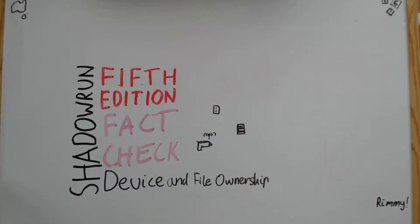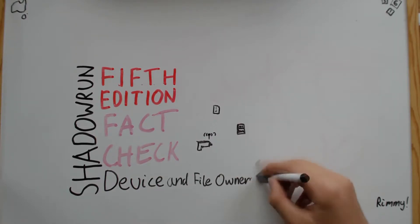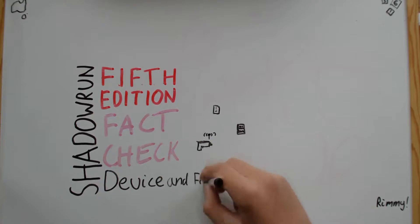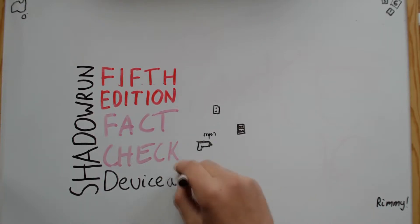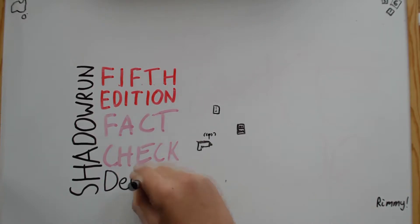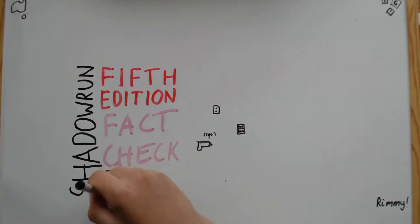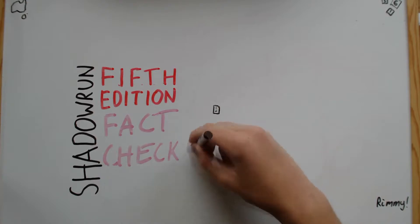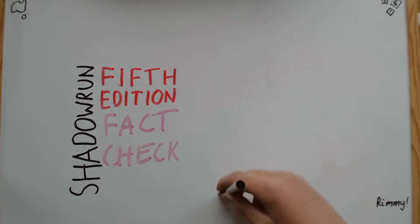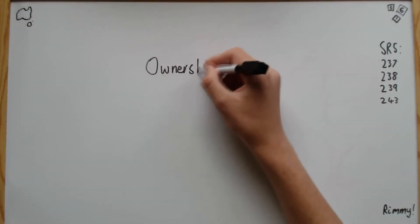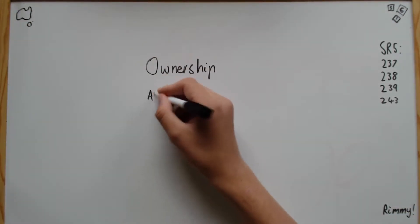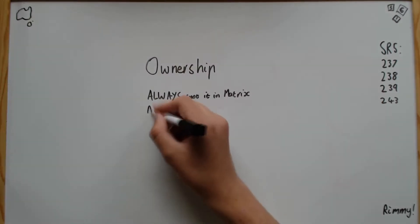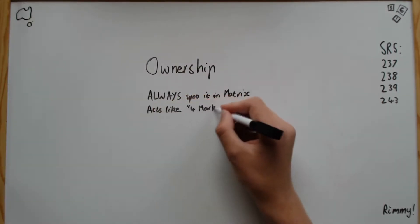In Shadowrun 5th edition, the owner of a device or file has special privileges and abilities that no one else can access, no matter how many marks they get. The owner of a device can always spot it in the matrix, and acts as if it had four marks on the device.